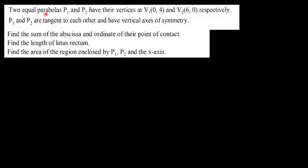Today's question: let two equal parabolas P1 and P2 have their vertices at (0,4) and (6,0) respectively. P1 and P2 are tangent to each other — meaning they touch each other or share a common tangent — and have a vertical axis of symmetry. This is a three-part question. The first part requires finding the sum of the abscissa and ordinate (x and y coordinates) of the point of contact where they touch.